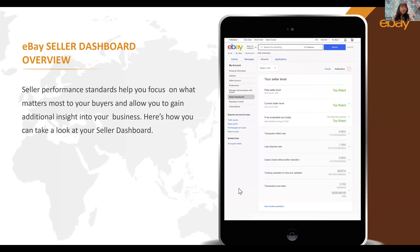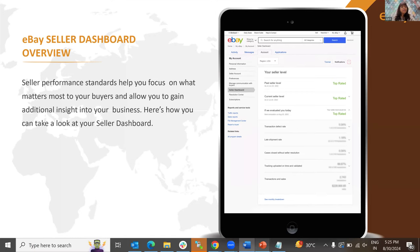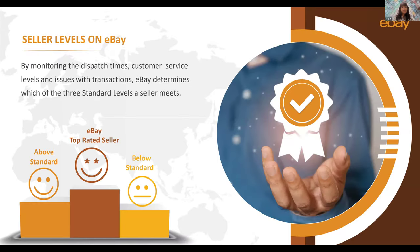On the screen, you can have a quick view of how your seller performance dashboard looks. Sellers are evaluated on certain service performance metrics on eBay and are assigned standards. These standards help you track your performance and let buyers shop with confidence. Based on factors such as dispatch time, customer service, and any issues with the transaction, you are assigned one of three levels: eBay top-rated seller, above standard, and below standard.